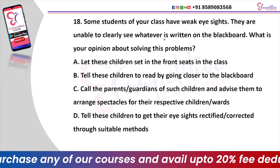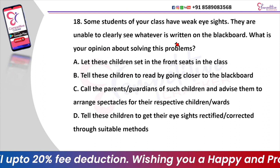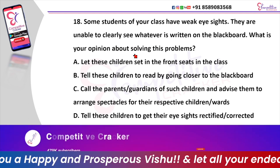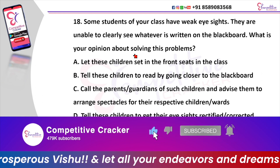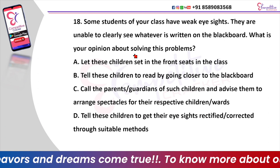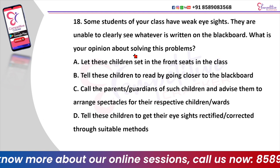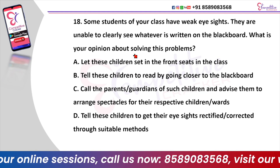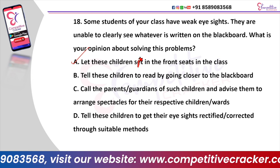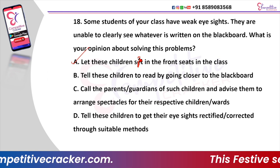Next question. Some students of your class have weak eyesight and are unable to clearly see what is written on the blackboard. What is your opinion about solving this problem? Option A, let these children sit in the front seats in the class. Option B, tell these children to read by going closer to the blackboard. Option C, call parents or guardians and advise them to arrange spectacles. Option D, tell these children to get their eyesight rectified through suitable methods. And the right answer is Option A — let these children sit in the front seats.